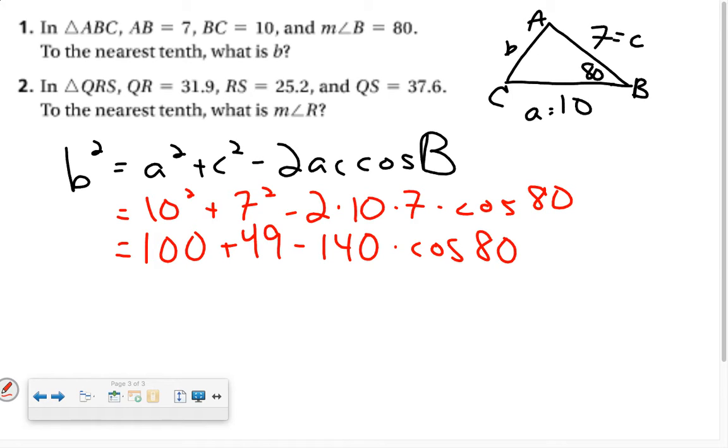And I'm going to warn you here. Here's where a common mistake happens. Put your pencil down. A common mistake I see students do is combine those three terms. You are not allowed to do that. That 140 is attached to cosine of 80, making it an unlike term to the 100 and the 49.